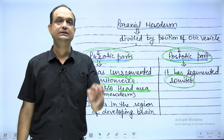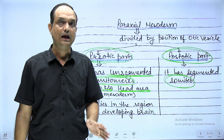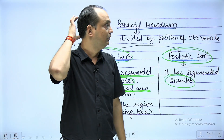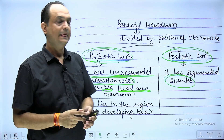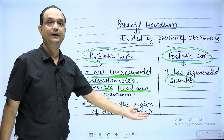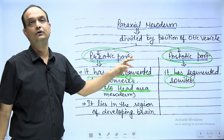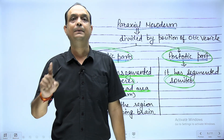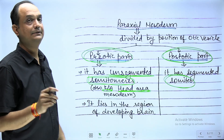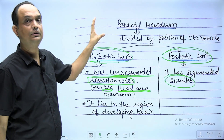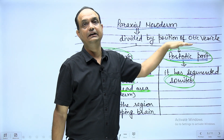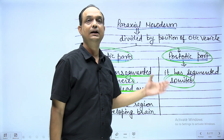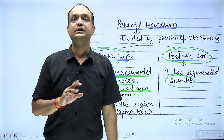If someone asks whether paraxial mesoderm around the developing brain has somites, the answer is no. Around the brain we don't have somites — otherwise we would have a vertebral column in the head as well. The preaortic part of paraxial mesoderm, which lies in the region of the developing brain, has somitomeres, which are the unsegmented part of paraxial mesoderm. The level of the otic vesicle is the line of demarcation between the pre- and post-aortic parts of paraxial mesoderm.